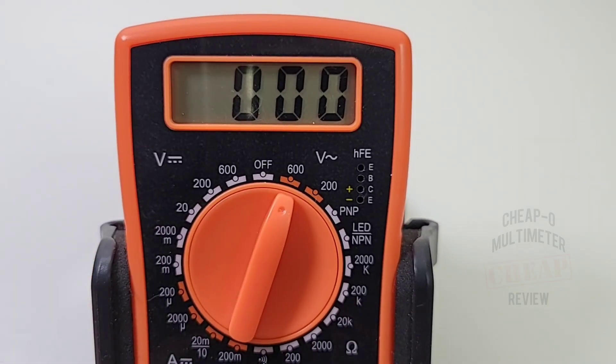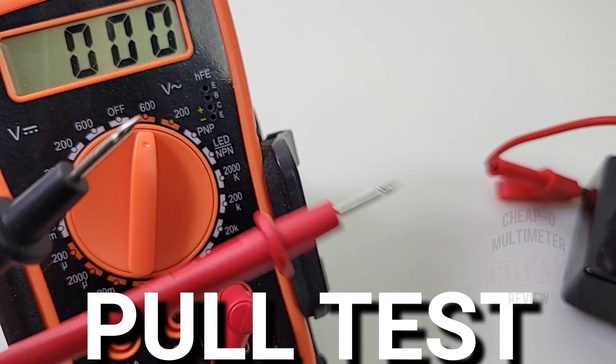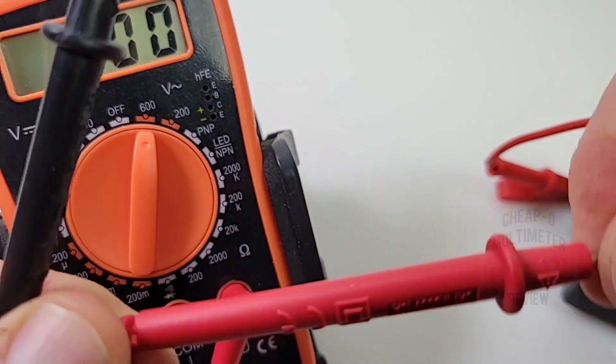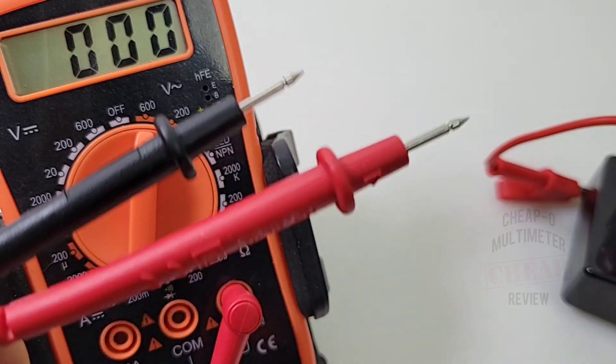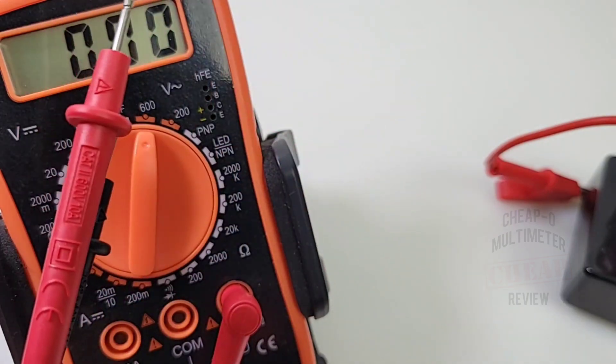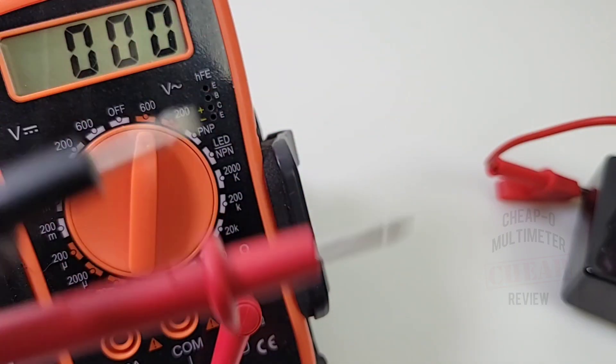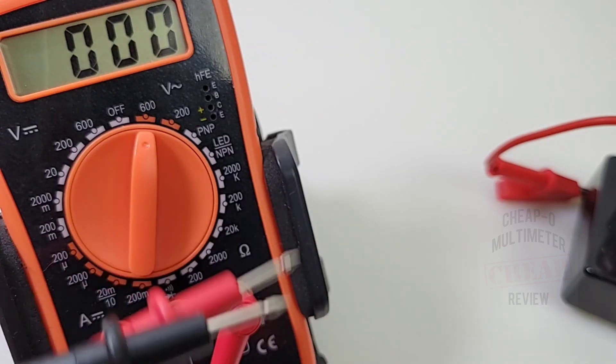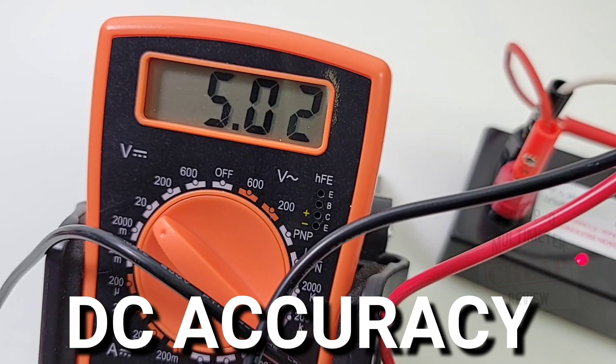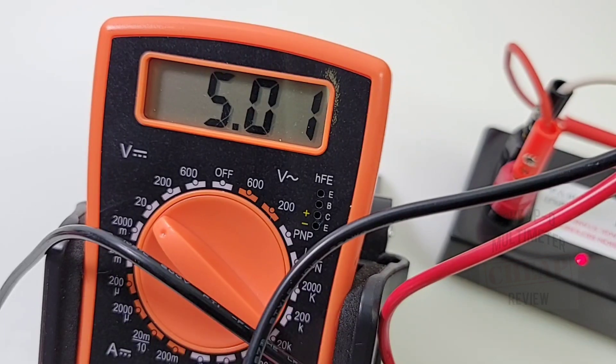Let's start off with the DC accuracy test. Those test probes are your standard sort of cheesy little test probe. It does pass the pull test though, it ain't coming out, so that's a good thing. Plasticky, CAT 2 600 volt, 10 amps. You know the drill: five volts is what we want. 5.012, oh wow, hey, it's in spec!